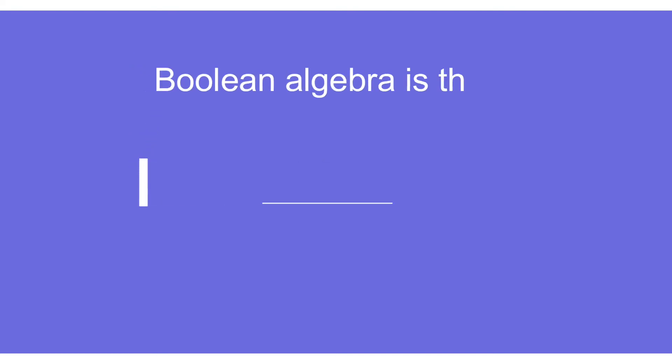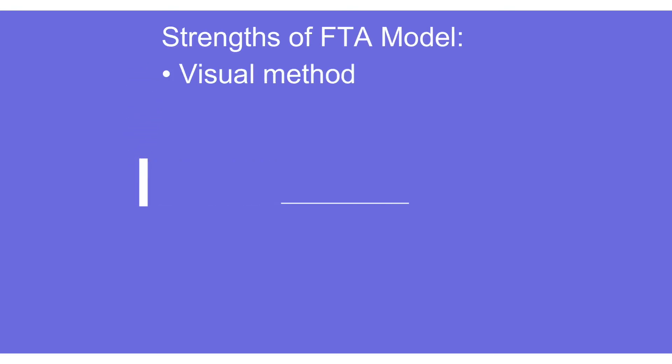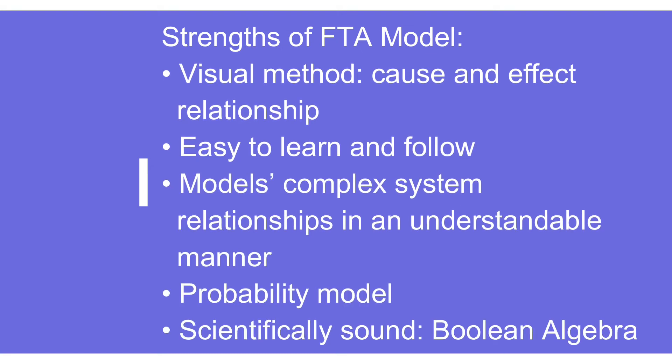FTA uses Boolean algebra, which is a branch of algebra that started in the 1840s, wherein different variables talk about truth values — true or false — primarily denoted by one and zero, sometimes called binary. The key strengths of FTA include: it is a visual method showing cause-and-effect relationships; it is easy to learn and follow; this complex model explains relationships in a very understandable manner; it uses a probability model; and it is scientifically sound because it uses Boolean algebra — a proven technique globally.